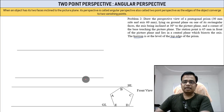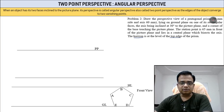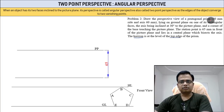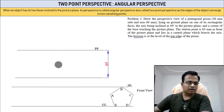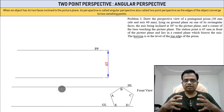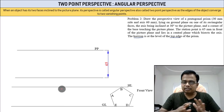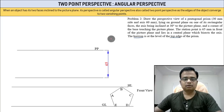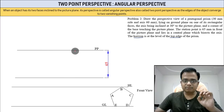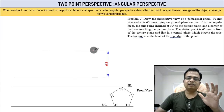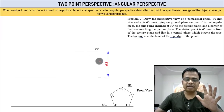The horizon line has been drawn. This distance between top view and front view can be anything — it doesn't matter. The PP is shown here. I located the station point first and placed the picture plane 65 millimeters above it.